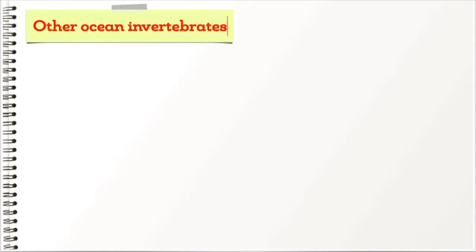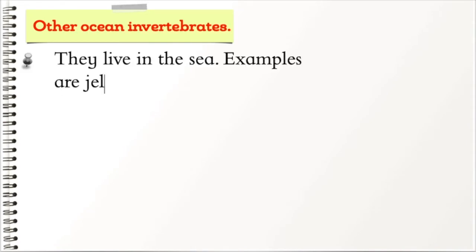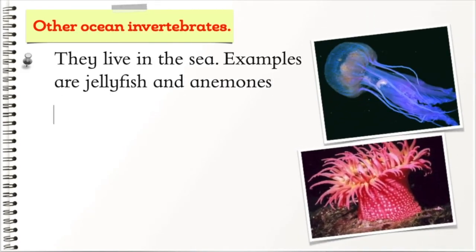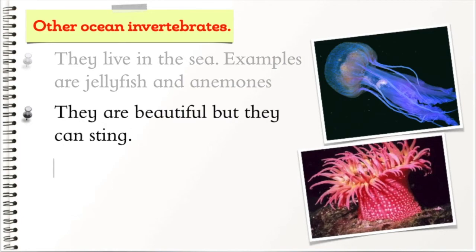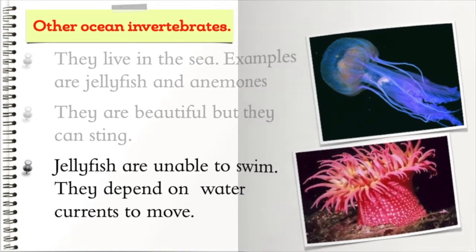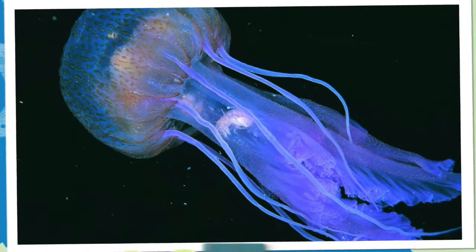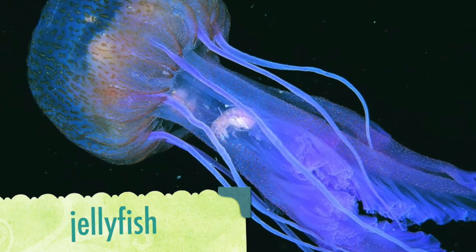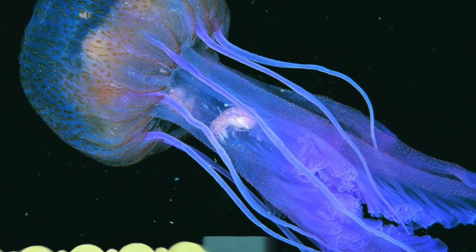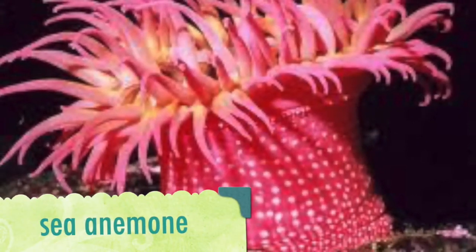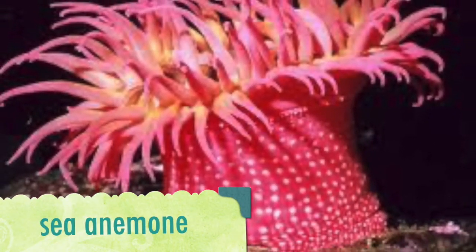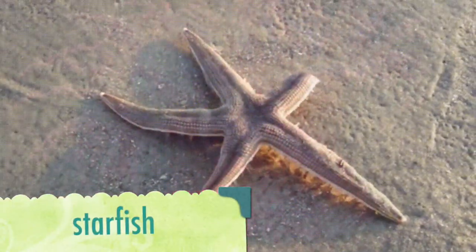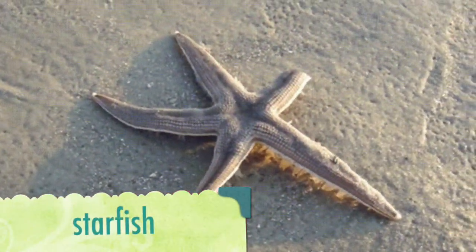There are other invertebrates that live in oceans. Examples are jellyfish and sea anemones. They can sting. Jellyfish are unable to swim — they depend on water currents to move. Other examples of invertebrates found in seas and oceans are starfish and sea urchins.